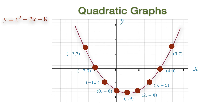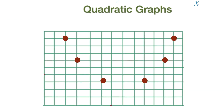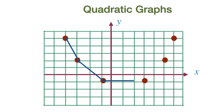Now all that remains is to plot them on the axis and join them with a smooth curve. Here are some classic quadratic graph failures. Number one: joining the points using straight lines. Remember that the quadratic graph is a curved line and this cannot be achieved by joining the points with straight lines. Number two: joining the top or the bottom of the graph with a straight line. This again has to be a curved line.